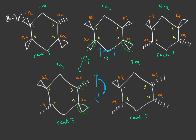The molecule with diaxial groups pointing in different directions is more stable, making it rank two, and the one with diaxial groups pointing in the same direction is less stable at rank four. So the final ranking is: rank one, two, three, four, and five — and that is how you rank conformer stability.